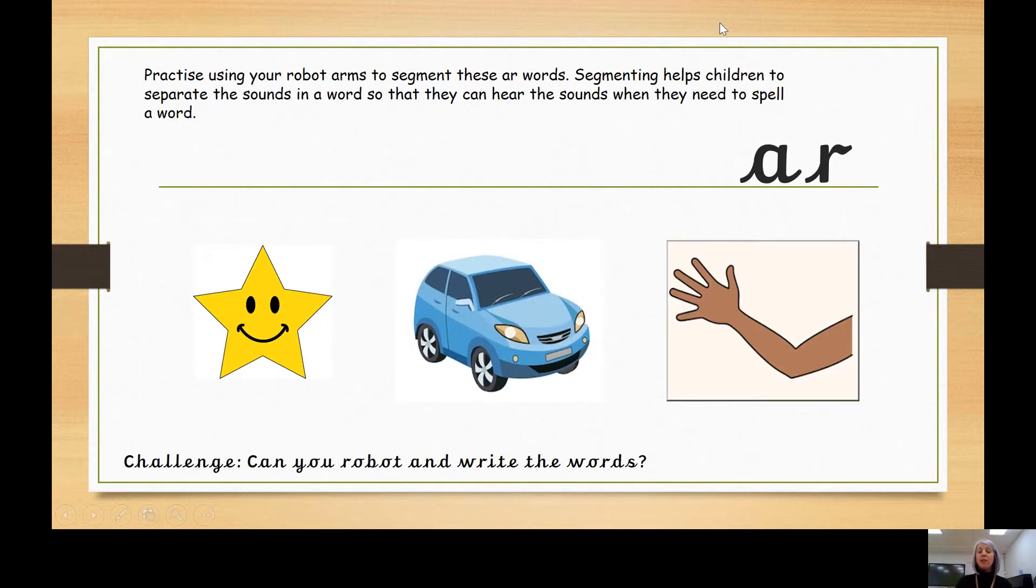Here we have three more pictures, and the words that we would write to spell these all have an AR digraph. So at home you could challenge yourself to robot and write the words to match these pictures. We have a star. Star. Oh, where can you hear the AR digraph in star? Star.